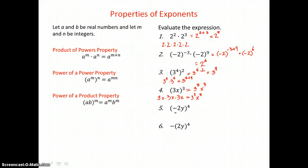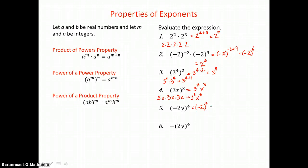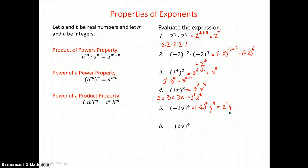Here in example 5, we have a product raised to a power, so we raise every factor inside parentheses to that power outside again. But we have an even number of negative factors, which is going to be a positive product. So I'll get rid of that negative sign and write this as 2 to the 4th power times y to the 4th power.